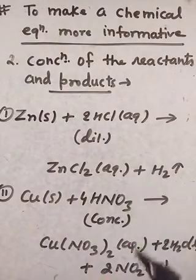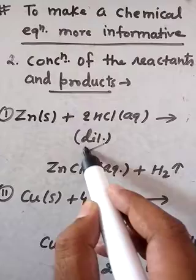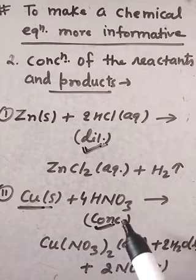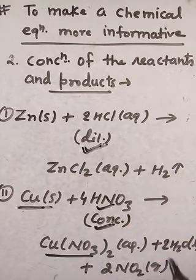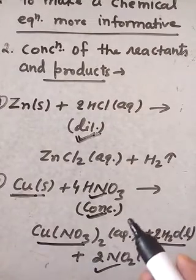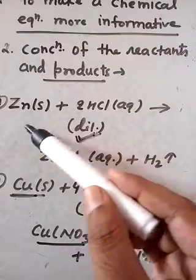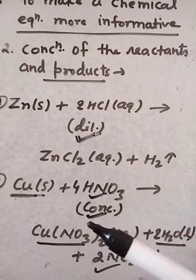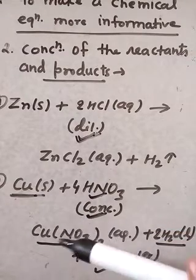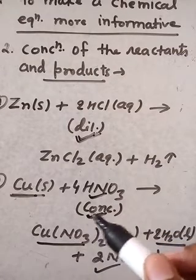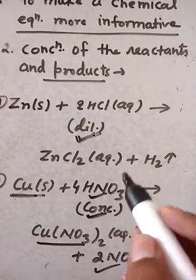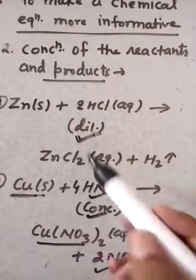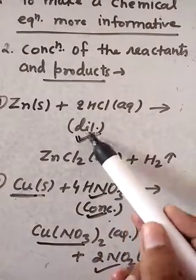In the first reaction, zinc reacts with dilute hydrochloric acid to form zinc chloride and hydrogen gas. In the second reaction, copper reacts with concentrated HNO3 (nitric acid) to form copper nitrate, water, and NO2. Highly reactive metals react with dilute acid, while less reactive metals react with concentrated acid. Concentration of reactants and products is represented by 'dil' and 'conc' for acids or bases.